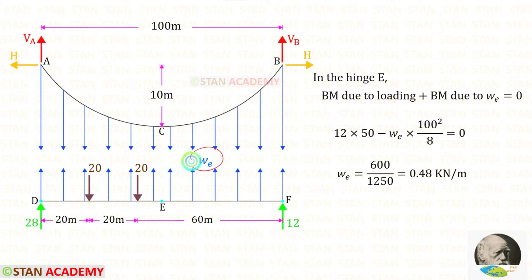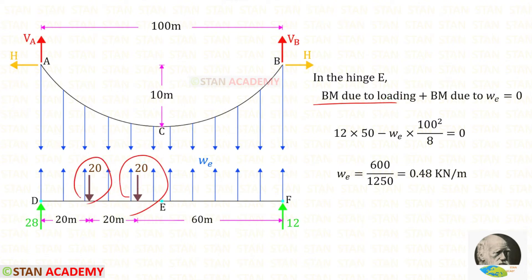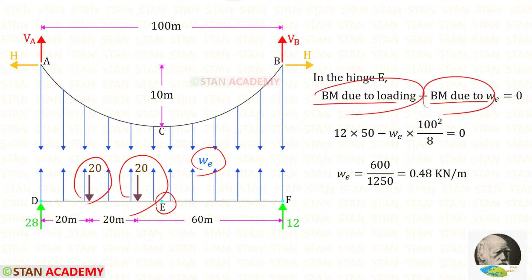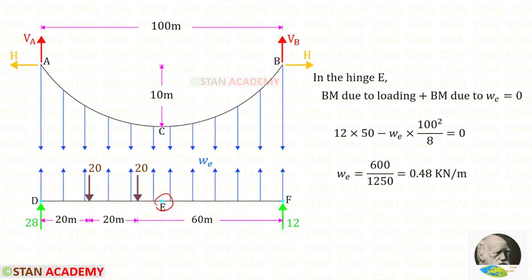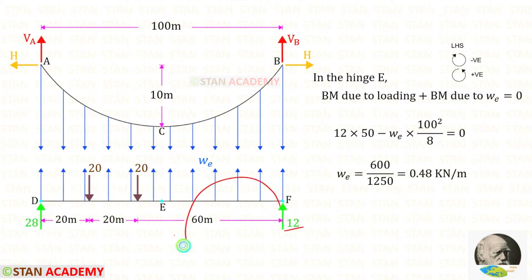Now let us find WE. We know that at hinge E the bending moment will be zero. There will be two bending moments: the first bending moment due to the loading, and the second bending moment due to WE. Since at hinge E the bending moment is zero, when we add these two it should be zero. At hinge E let us find the bending moment due to the loading. If we find from the right side it will be easy. This reaction is acting in the anti-clockwise direction so that it will be positive and the distance is 100 by 2, so it will be 50.